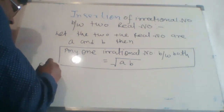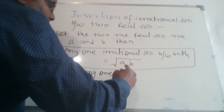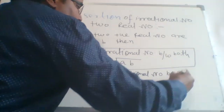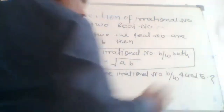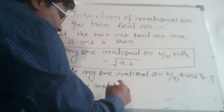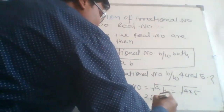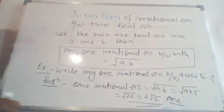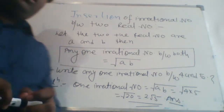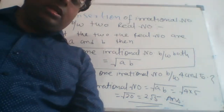Let us see an example. Write any one irrational number between 4 and 5. The solution: one irrational number equals under root A into B, which means under root 4 into 5, which means under root 20, which means 2 root 5. This is your answer. By this method, we can insert any irrational number between two given positive real numbers.